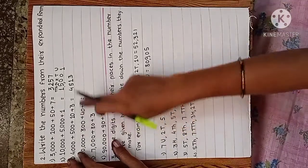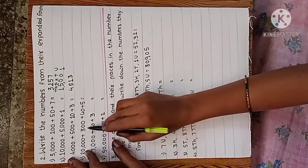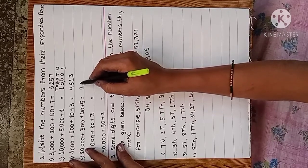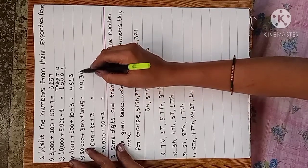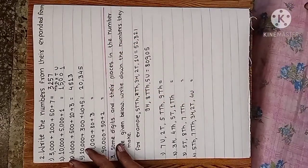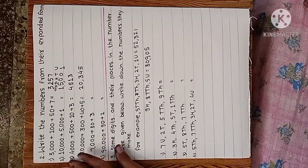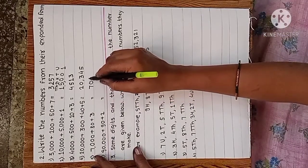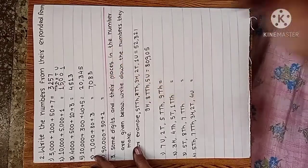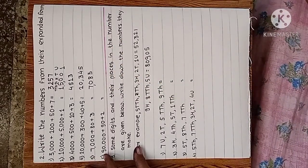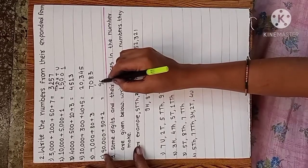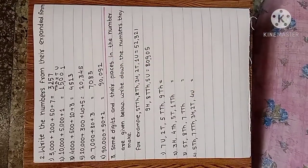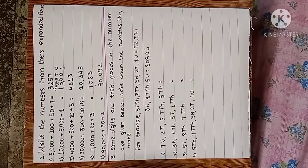We do the addition. Now next: 20,000 plus 300 plus 40 plus 5 — 20,000 plus 300 plus 45 means the number is 20,345. Now next: 7000 plus 80 plus 3 — the number is 7083. Now next: 90,000 plus 90 plus 2 means 90,092.